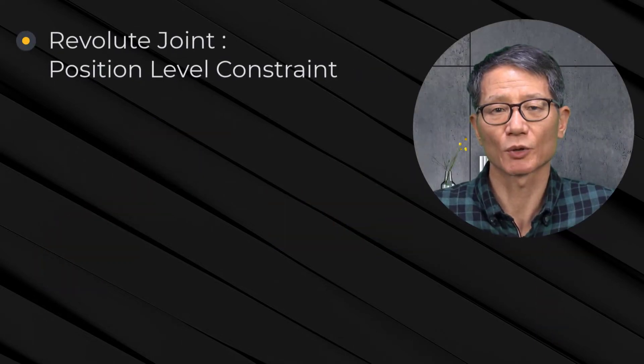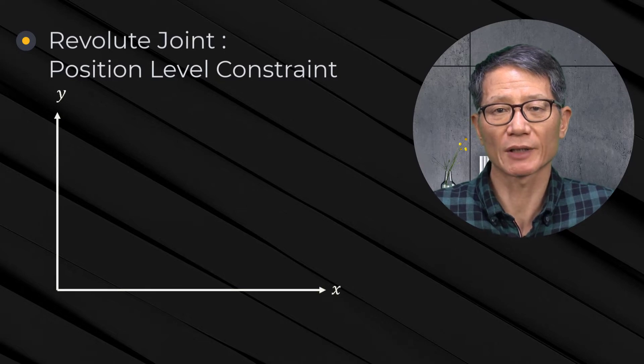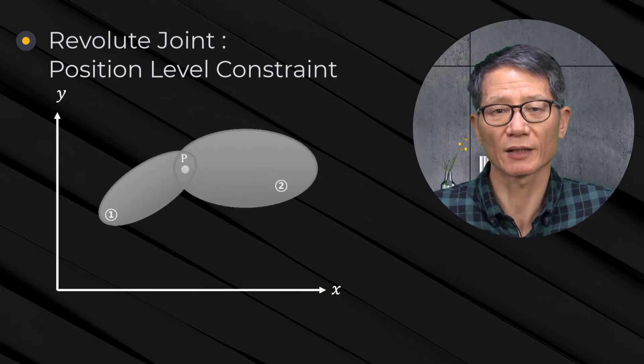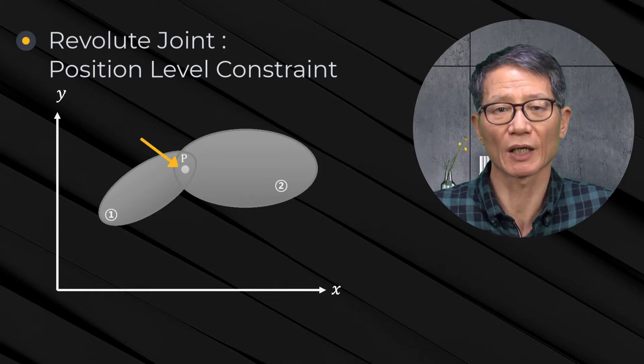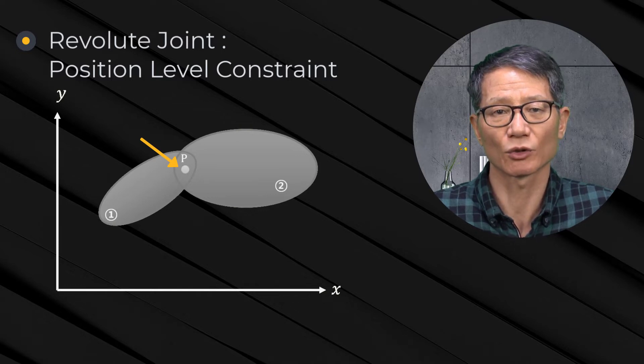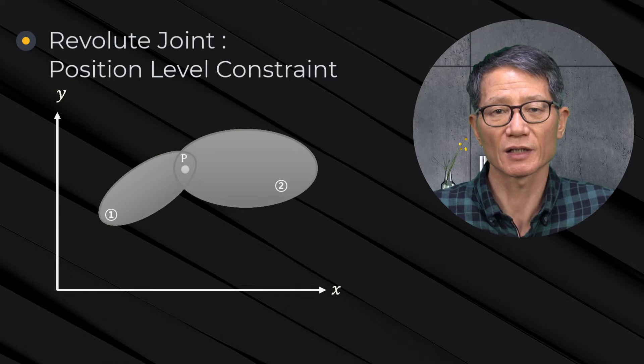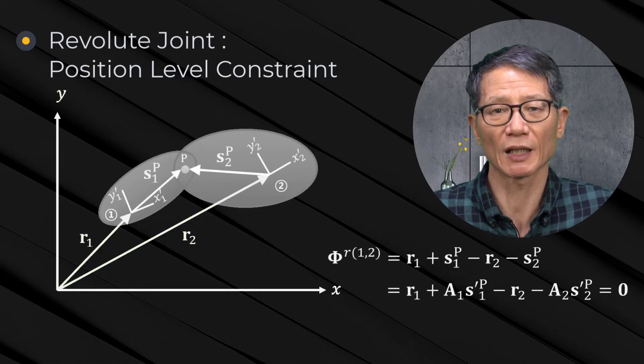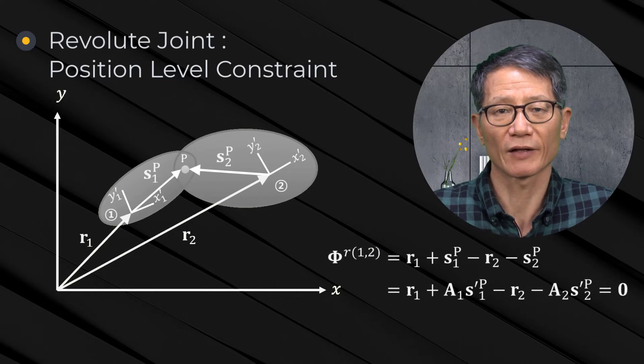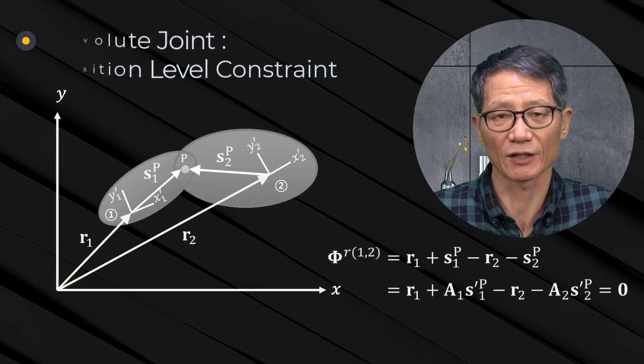Revolute Joint: Position Level Constraint. Let us take a look at a Revolute Joint as an example. I will show you how we can formulate the Revolute Joint for the corresponding algebraic constraint equation. A Revolute Joint allows relative rotation about point P that is common to bodies 1 and 2, as shown in this figure. Since point P must coincide, the vector additions to locate point P must be equal. Therefore, the constraint equation becomes like this.